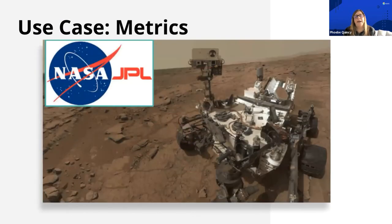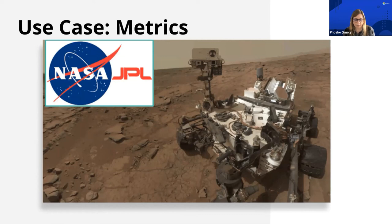We are also involved with some of NASA's projects. Elastic is frequently used to gather metrics — one of our favorite examples is the Mars Curiosity rover. NASA's Jet Propulsion Lab has the rover send telemetry sensor and photo data into the Elastic stack for analysis. This allows researchers to monitor how hot it is on Mars on an hourly basis.